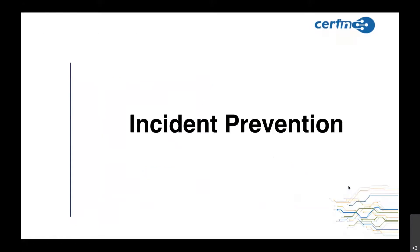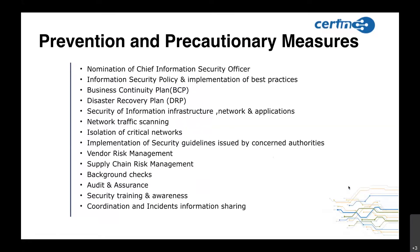Now we will see incident prevention — the prevention and precautionary measures that should be taken. The first is the nomination of a Chief Information Security Officer in the organization. There should be a proper information security policy as per the guidelines, then a Business Continuity Plan, a Disaster Recovery Plan, security of information infrastructure, network and applications, network traffic scanning, and isolation of critical networks. These are very important. You should also implement security guidelines issued by the concerned authorities on a regular basis.